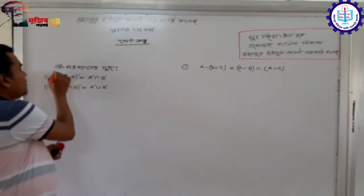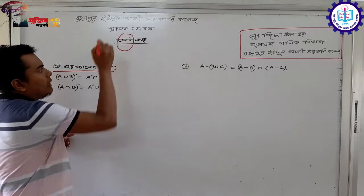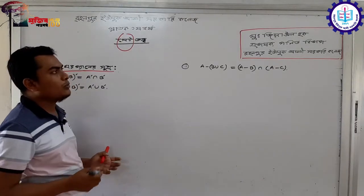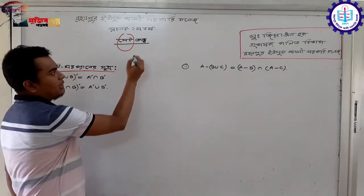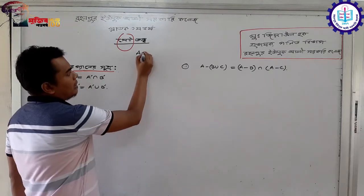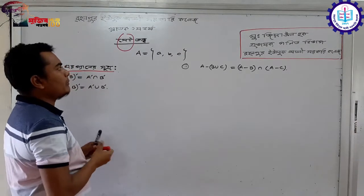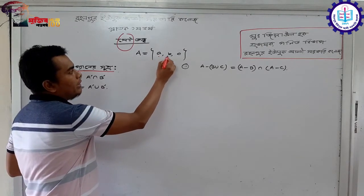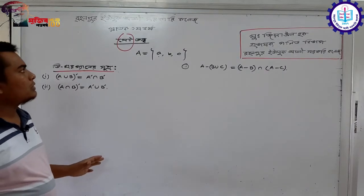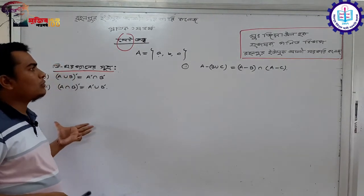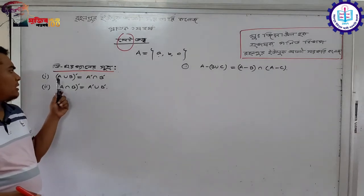The set theory — a set is defined as a collection of distinct objects (drishto bostu samoher). A set is denoted by a capital letter, so A = {A, B, C} is a set. In degree class, the topics we will study are De Morgan's theorems.